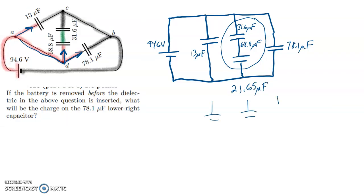So if I redraw this, now it's like we have three different capacitors. This one's still 13. This one's 21.65 and this one is 78.1. And for now, at least, they're still across this battery. So I'm going to find the equivalent capacitance of all three of them. And since they're in parallel, I'm just going to add them together. That makes it real easy.